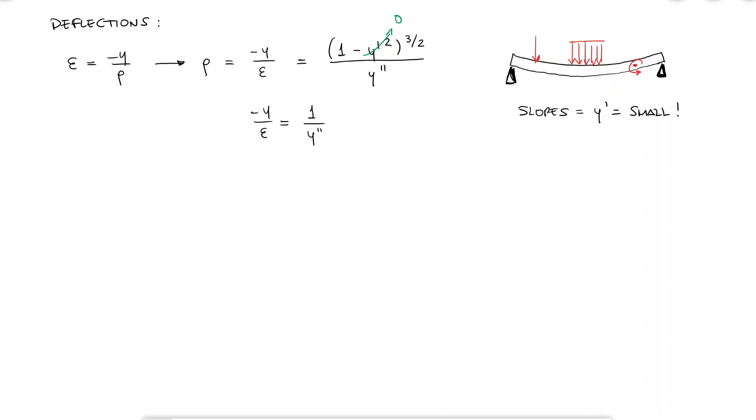We already knew that the elastic modulus times the strain is equal to the stress, so if I substitute the strain by sigma over elastic modulus, and sigma by minus M y over I, from what we learned today, I find that y double prime is equal to M over EI.